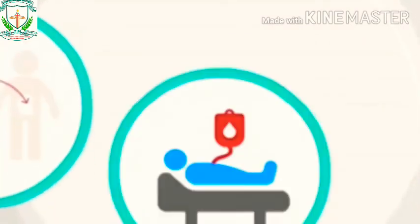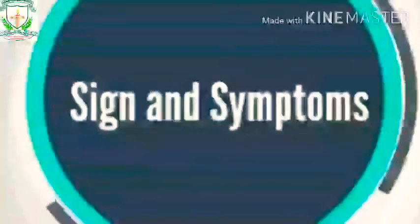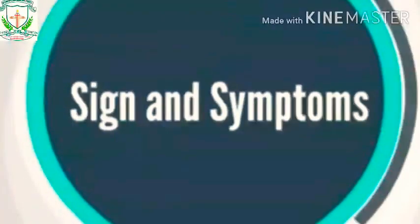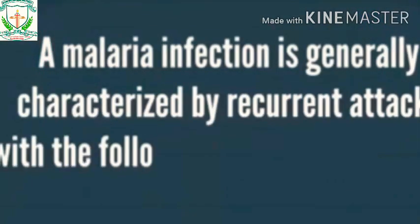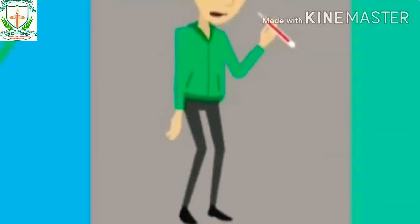Malaria is transmitted by blood, so it can also be transmitted through an organ transplant, a blood transfusion, or the use of shared needles or syringes. A malaria infection is generally characterized by recurrent attacks, with signs and symptoms including moderate to severe shaking chills, high fever, and sweating.